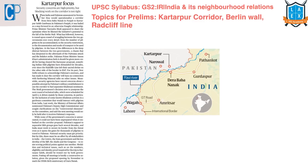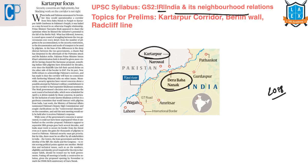The next article is 'Kartarpur Focus.' This article comes under GS Paper 2 under the topic of international relations, subtopic India and its neighborhood relations. The context is that India and Pakistan in November 2018 announced they will build a corridor from Dera Baba Nanak in Punjab to Kartarpur Sahib Gurudwara in Pakistan's Punjab. From the prelims point of view, this article mentions the Kartarpur Corridor, the Berlin Wall, and the Radcliffe Line.